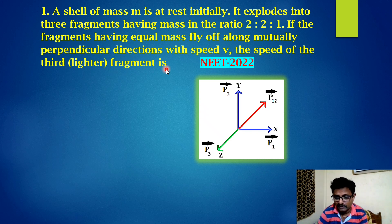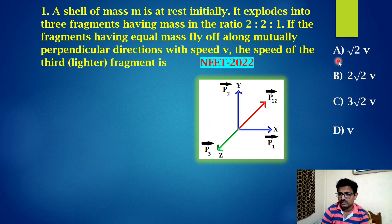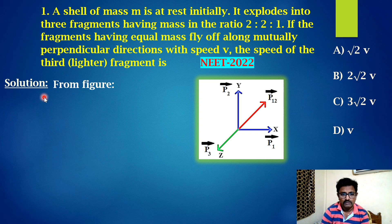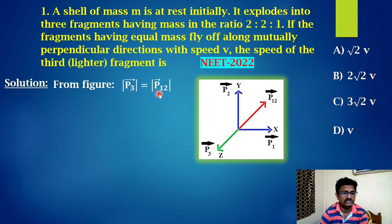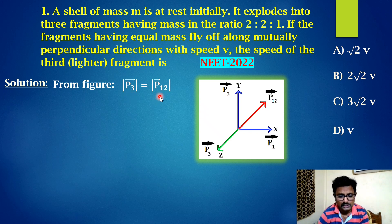Among these three fragments, two fragments have the same speed v, and we have to calculate the speed of the third fragment. This was given in NEET 2022. From the figure, the magnitude of momentum p3 is equal to the resultant magnitude of momenta p1 and p2. The resultant magnitude of p1 and p2 is equal and opposite to the magnitude of momentum p3, so we can write: magnitude of p3 equals resultant magnitude of p1 and p2.